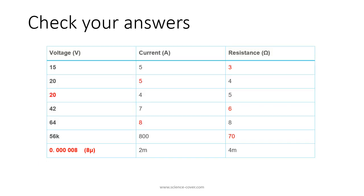We were then asked to complete the missing values in the table. The first missing value was 3 ohms, then 5 amps, 20 volts, 6 ohms, 8 amps, 70 ohms, and then 0.0008 which is 8 microvolts.